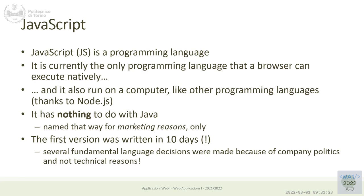It shows that some design choices — or really implementation choices — were made by rushing something together. The initial aim was having a language for building animations on web pages, for purely aesthetic reasons. One person invented this language and implemented it in the first browser. Many of these implementation choices still show in the language today as strange behaviors we wouldn't expect. And for compatibility reasons, we cannot throw away some of those strange behaviors.